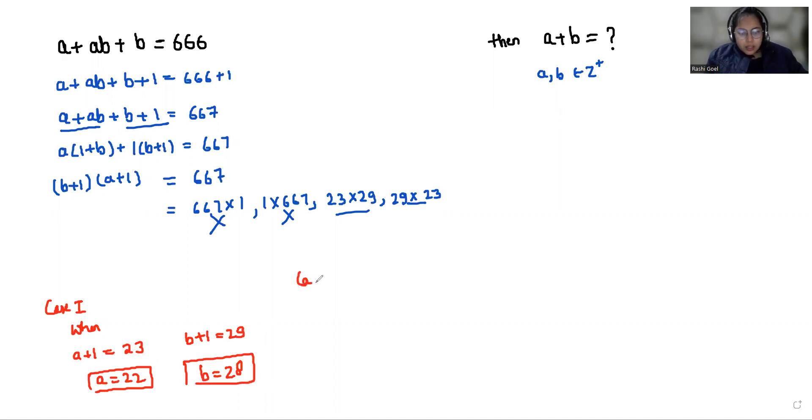Case 2: Then A plus 1 equals 29, so A equals 28, and B plus 1 equals 23, so B equals 22.